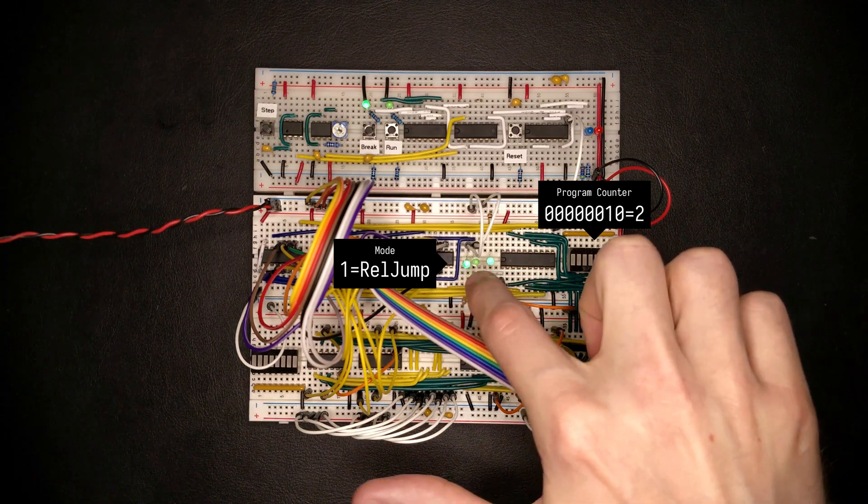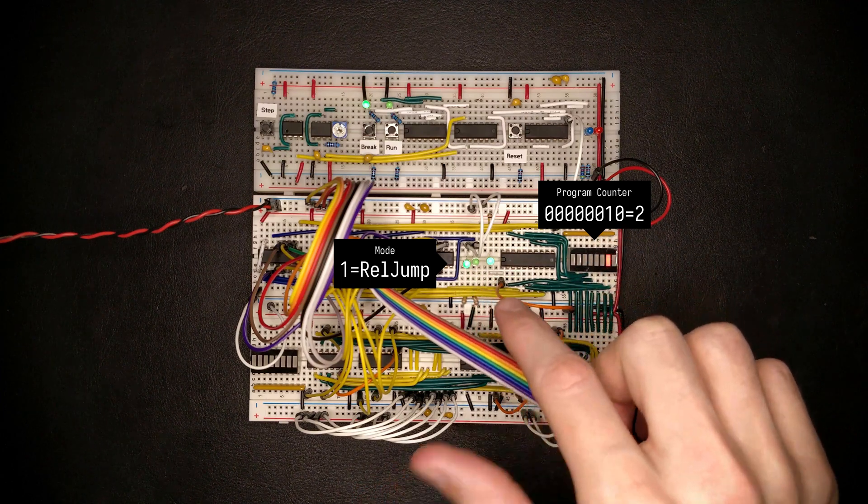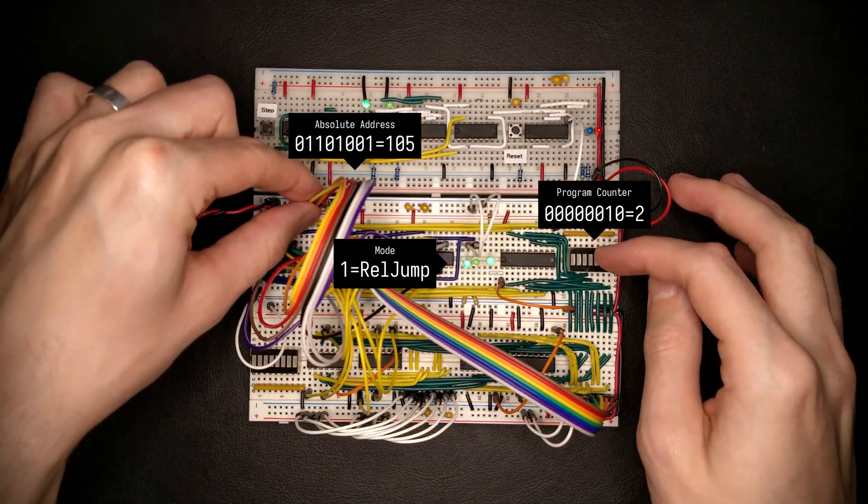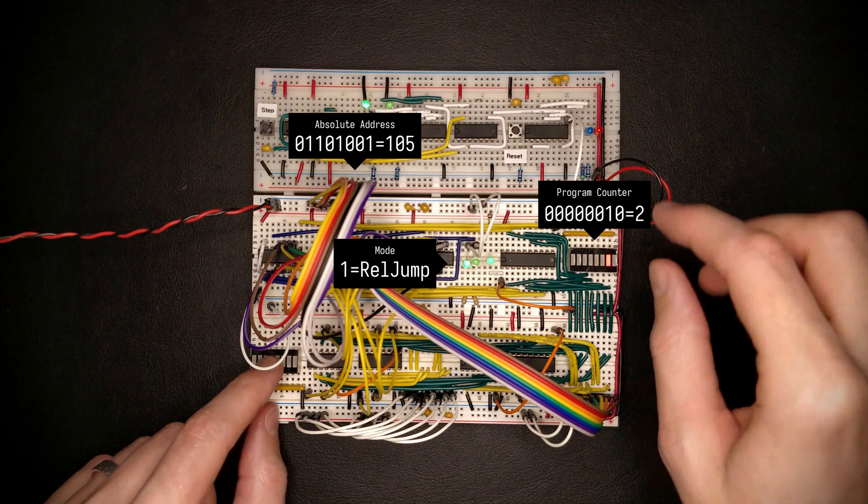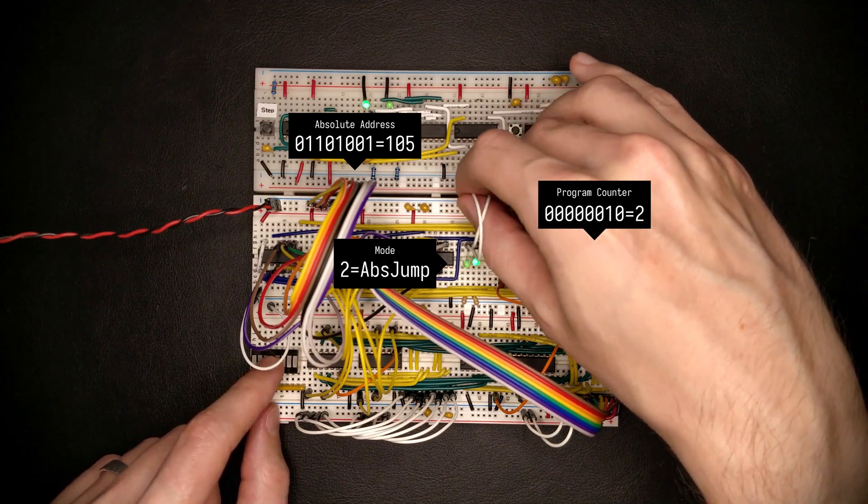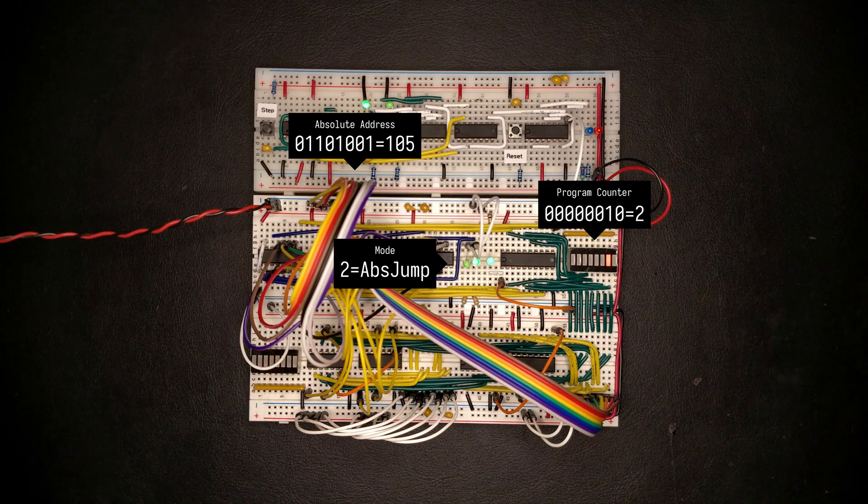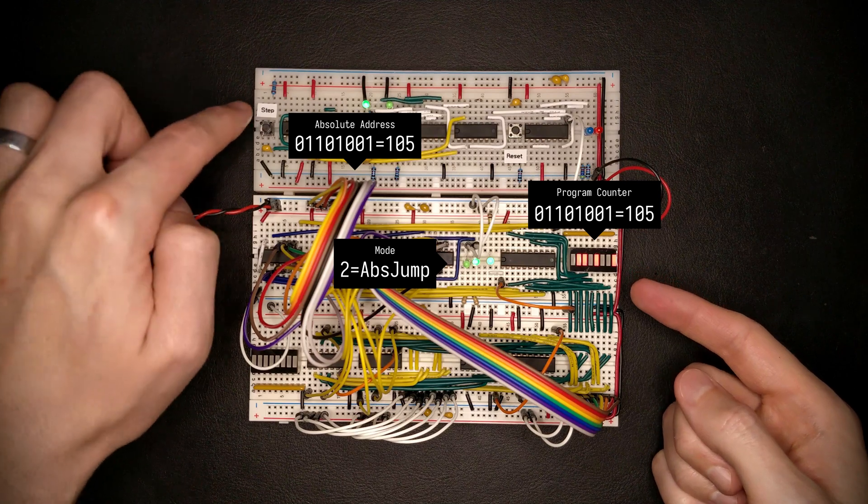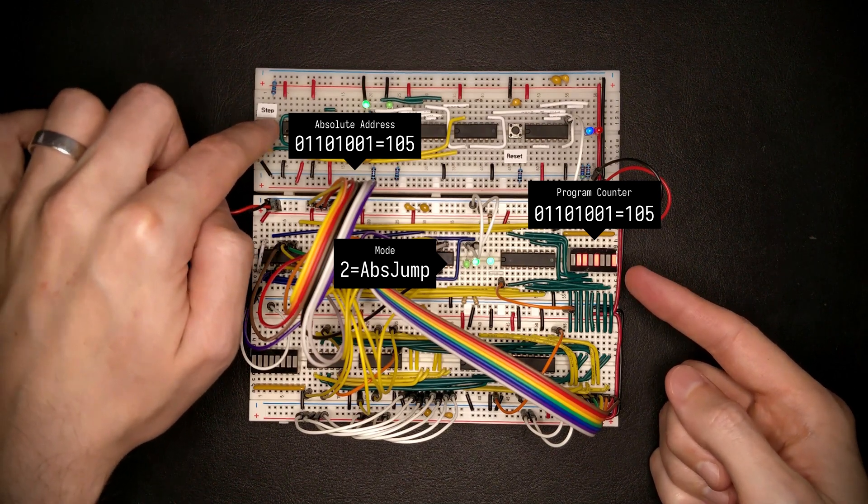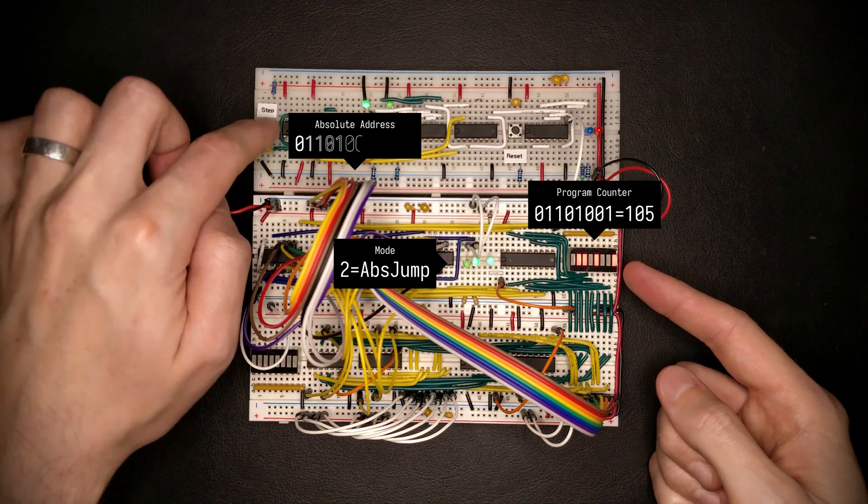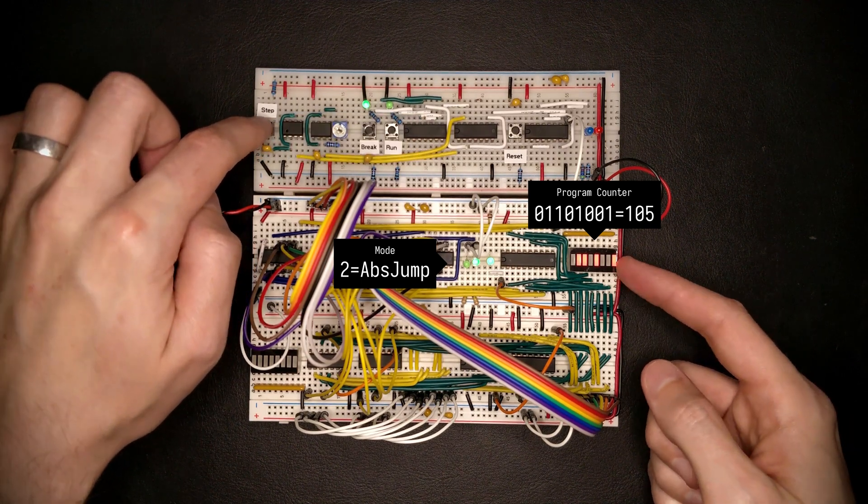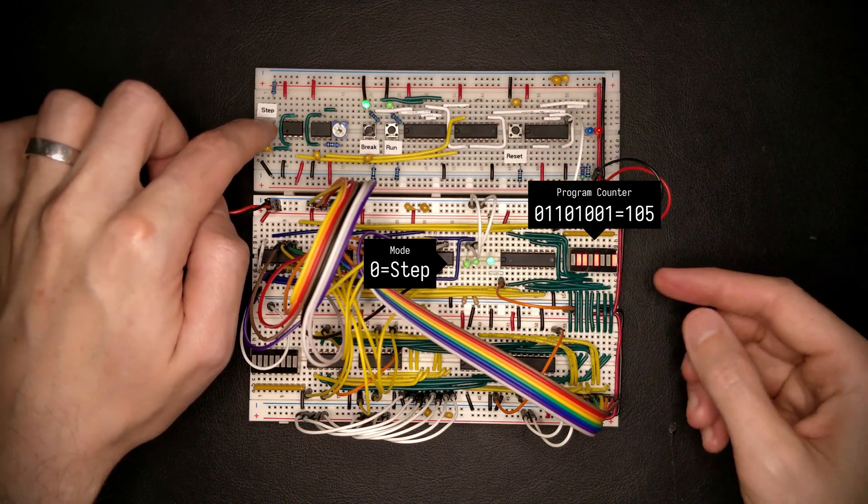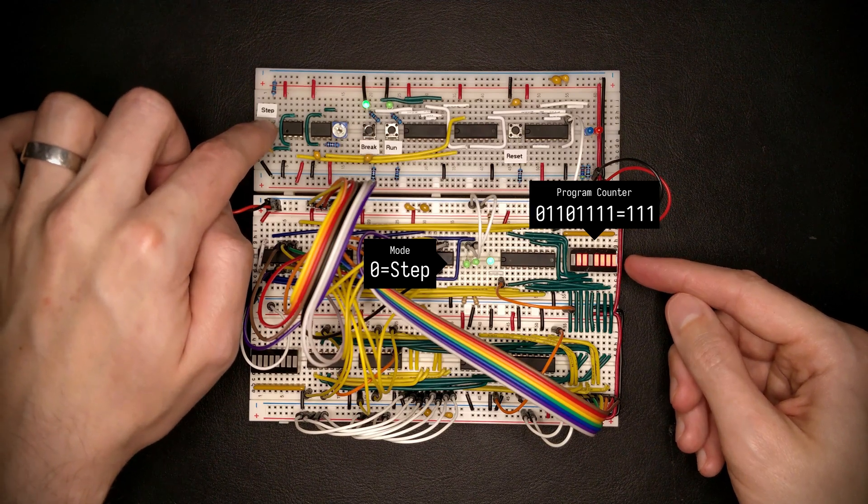Now if we select input two we are actually selecting the absolute jump input which is basically just copying whatever's on this absolute jump address wire into the PC, so let's see if that works. And sure enough that's exactly the pattern I programmed and hitting the step button is just going to copy the same address over and over into the PC so nothing happens. But say we've jumped here with the program, if I now select zero again which is the regular stepping mode we can actually just continue stepping through instructions starting at that address.